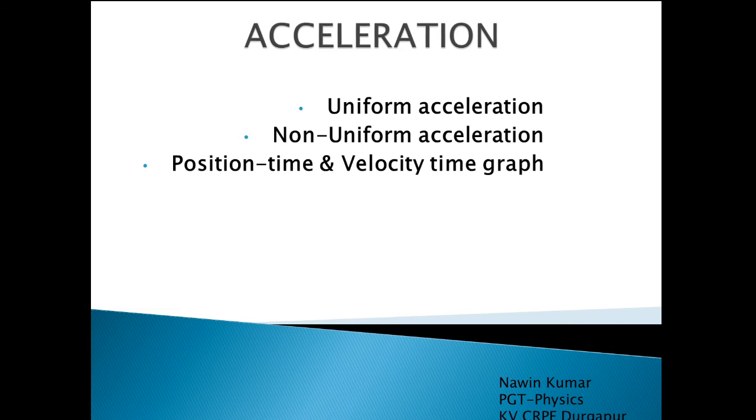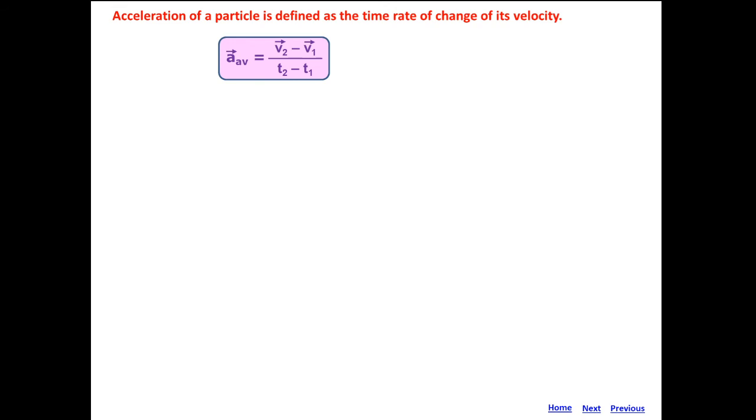In earlier classes, that is in class 9, we have learned about acceleration. What is acceleration? The time rate of change of velocity of a particle is acceleration. So, average acceleration will be ΔV by ΔT, means V2 minus V1 by T2 minus T1. Since we are using velocity, we use vector notation. A_average equals ΔV by ΔT.